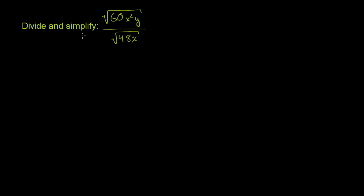We're asked to divide and simplify. And we have one radical expression over another radical expression. The key to simplify this is to realize if I have the principal root of x over the principal root of y, this is the same thing as the principal root of x over y.